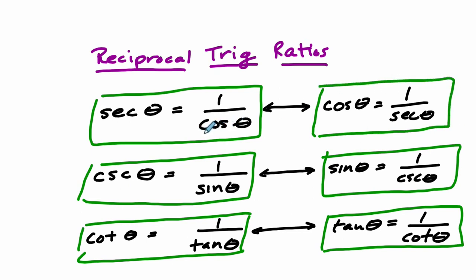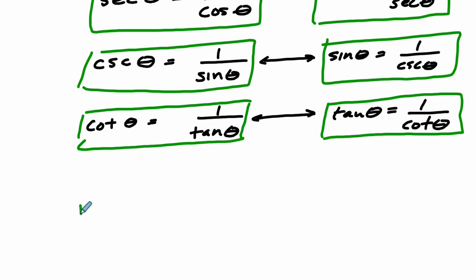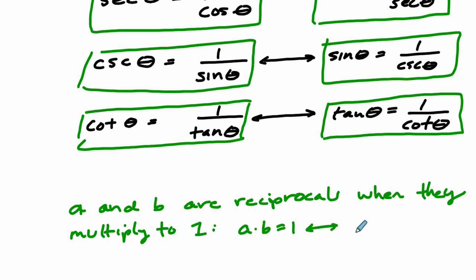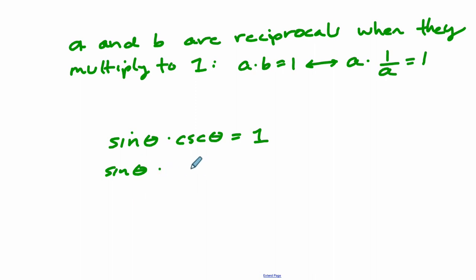Even without doing that manipulation algebraically, I know this has to be true: two things are reciprocals if they multiply to one. A and B are reciprocals when they multiply to one — meaning A times B equals one, so B equals one over A. So if I said that sine and cosecant of theta are reciprocals, that means if you multiply them you have to get one. The only way that happens is if the cosecant of theta is one over the sine of theta, because those sines cancel out and give you one.